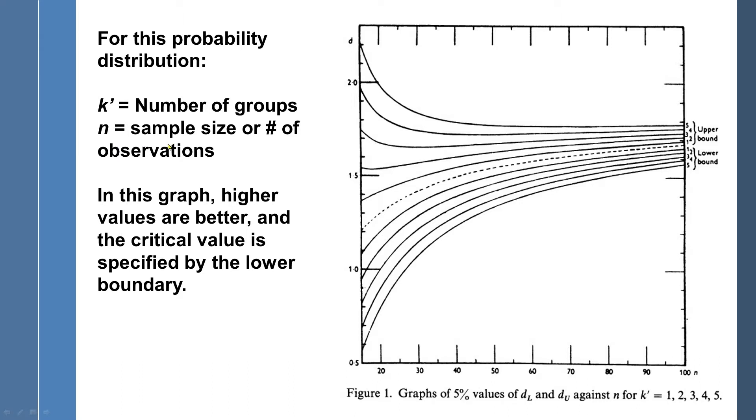N would be the number of observations. And typically, in single case design research, you have less than 20 observations. So we're dealing with small sample of data. We would be down here, on the x-axis.